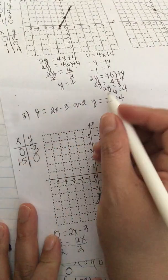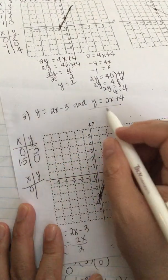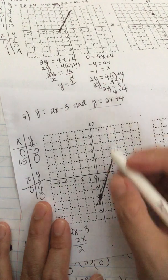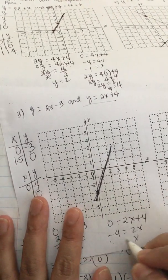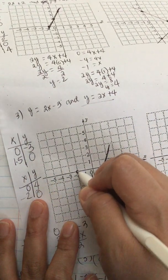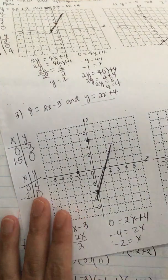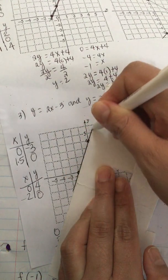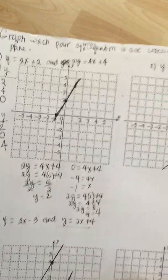For y equals 2x plus 4: when x is 0, y equals 4. When y is 0, we solve 0 equals 2x plus 4, so minus 4 equals 2x, meaning x equals negative 2. We plot (0, 4) and (negative 2, 0) and draw the line. This is how you graph linear equations.